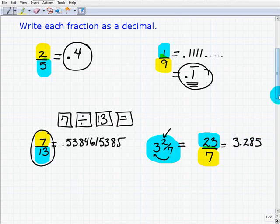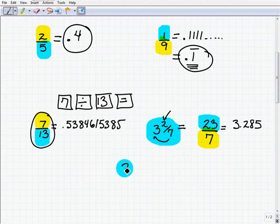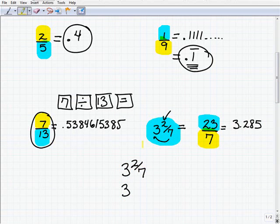Now, another way you could have done this is saying, okay, I have 3 and 2 sevenths. You can write the 3 right here. And now let's just go ahead and change the 2 sevenths part into a decimal. So that's going to be 3 point. Now take 2 sevenths, 2 divided by 7, and you get .285. You can just write that right here, .28571, etc. Okay?